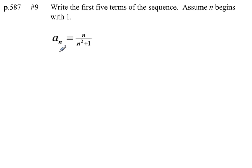We're given an equation a sub n equals n over n squared plus 1. Now a sub n stands for the nth term of the sequence. n is the term number.